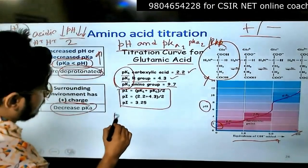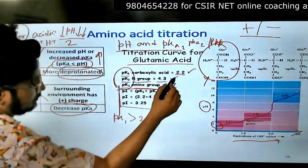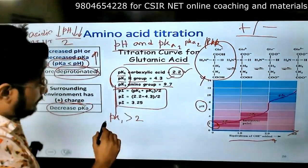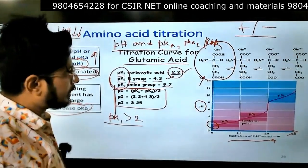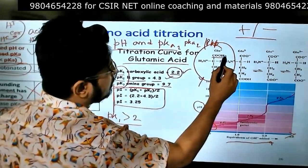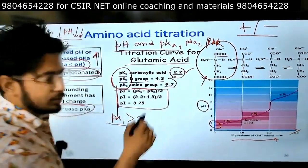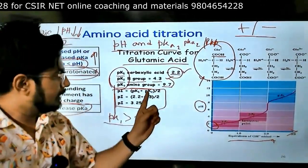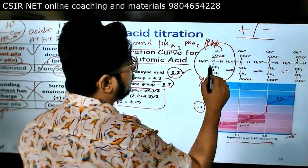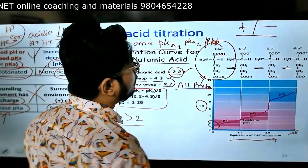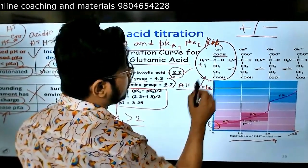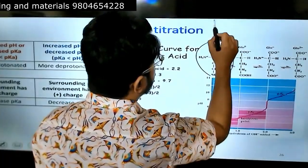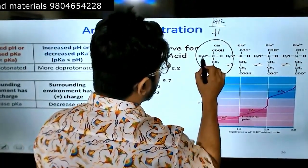This is glutamic acid to start with at pH 2. We compare this pKa. pKa1 of 2.2 is greater than pH 2. The pH is 2 we are looking. If pKa is greater than pH then protonation. So COO remains protonated. No deprotonation for any group because all pKa values are more than pH 2. Everything will be protonated. So the net charge here is plus 1.